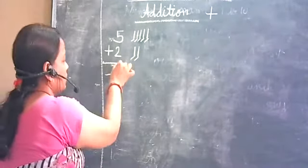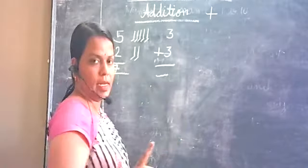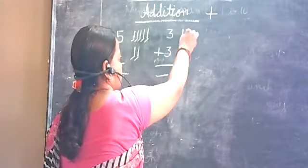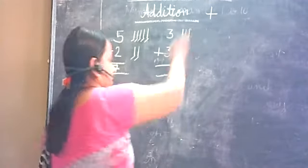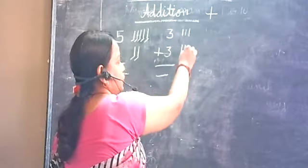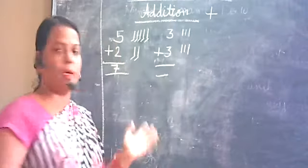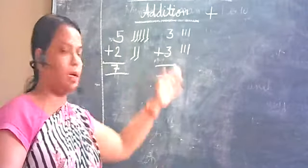3 plus 3. First of all, 3 lines. So, we will do 3 lines. 1, 2 and 3. Second is 3. So, we will do 3 lines. 1, 2 and 3. Now, what will we do? Add. So, plus and count. 1, 2, 3, 4, 5 and 6. Total is equal to 6.